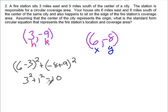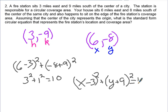But I'm not done. I need to put this back into the equation. So I would have x minus three squared plus y plus nine squared equals ten.